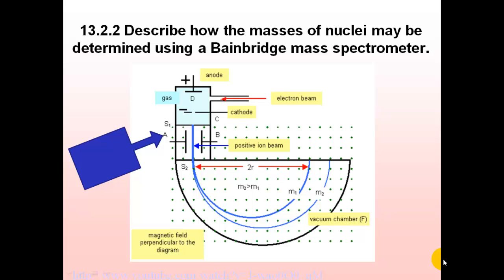We can determine the masses of nuclei by using what's called the Bainbridge spectrometer. Now how does it work?